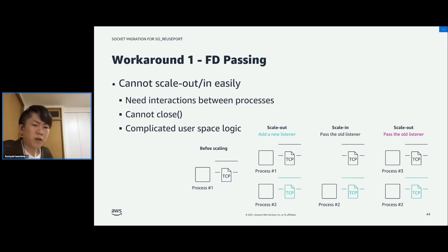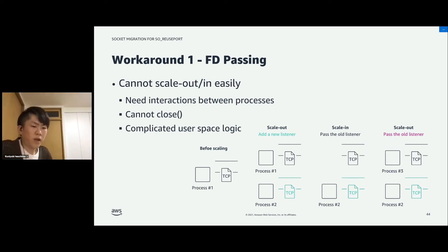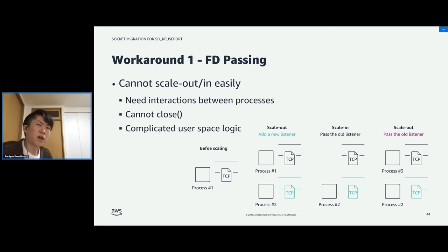But fd-passing needs interaction between processes and loses this merit. After fd-passing, it does not close the listener, but that means it cannot close the listener. If we want to scale in servers, we still have to pass the listener, otherwise connection failure happens. So if we do scale-out, scale-in, and scale-out again, we will see that the first and second scale-outs require different logic. The first time, the process creates a new listener, but the second time, the new process has to receive a listener from another process. And if a configuration change happens and the new process listens on another port, the old process cannot pass its listener and will have to close it, causing the problem. So if we use fd-passing, we have to accept this kind of complexity.